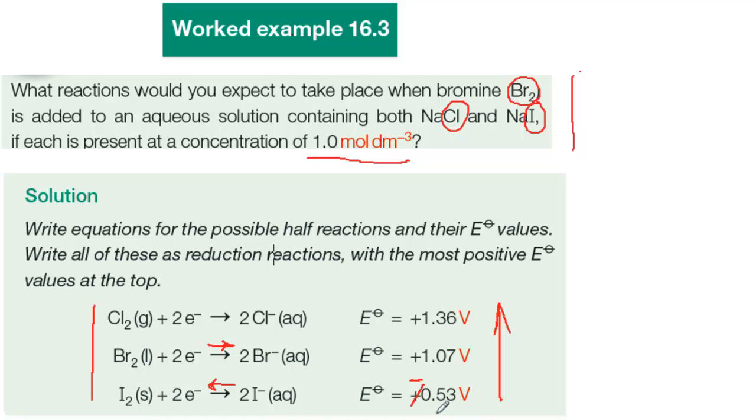Br2 will oxidize I-. But Br2 won't oxidize Cl- because this half reaction is above the bromine half reaction. So Cl2 is a stronger oxidizer than Br2.